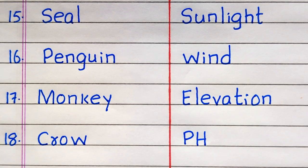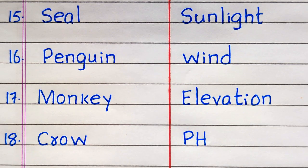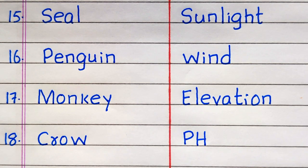15th example of an abiotic factor is Sunlight, 16th Wind, 17th Elevation, 18th pH value.